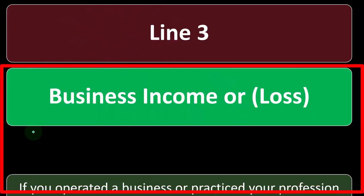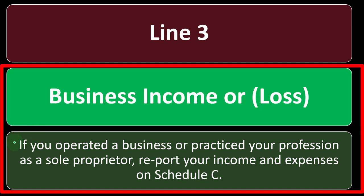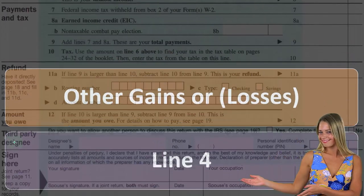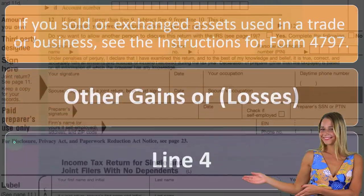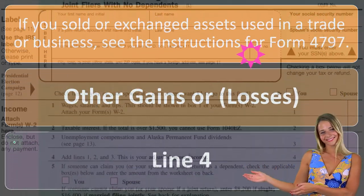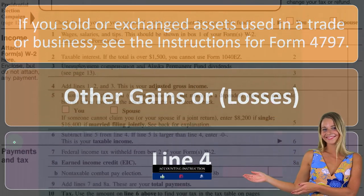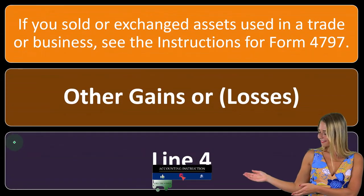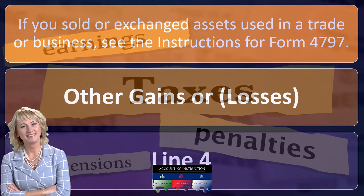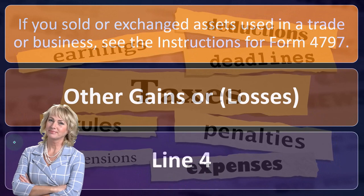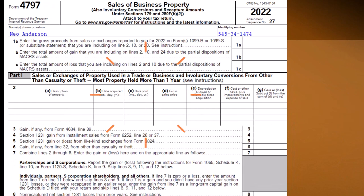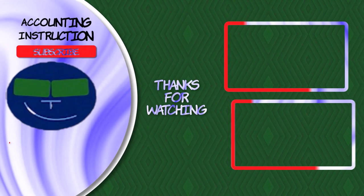Line 3 is business income or loss. If you operated a business or practiced your profession as a sole proprietor, report your income and expenses on Schedule C. We can also look at line 4, other gains or losses. If you sold or exchanged assets used in a trade or business, see the instructions for Form 4797. That typically involves fixed assets that were sold where another form is involved. We'll take a look at this in a bit more detail in our example to see how it flows through on the tax forms, and then again in more depth when we talk about Schedule C in general. Here's a quick glance at Form 4797, Sale of Business Property.